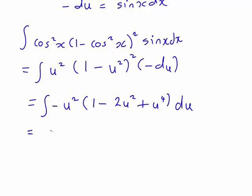So, this is starting to look a bit simpler. Now, we can simply multiply the brackets through by negative u squared, which means that we're now working out the integral of this expression here with respect to u.